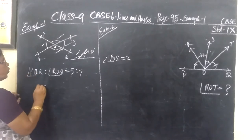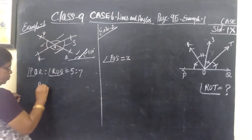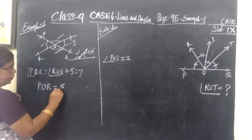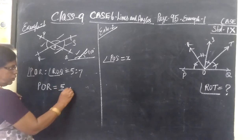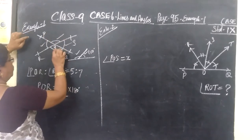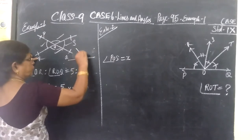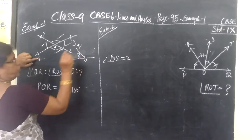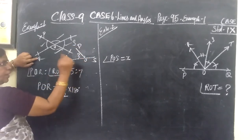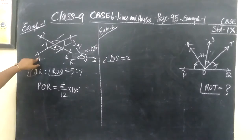Here it is given angle POR. First we find angle POR. So POR equals 5 by total part 12 into 180. How you get this 180? Here POR, this is a straight line, and OP stands on it.